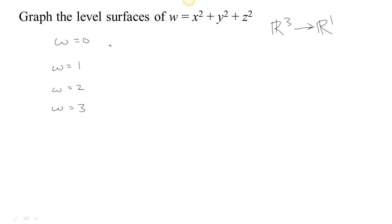So if w equals zero, we have x squared plus y squared plus z squared equals zero, which is just a single point, right? The only way that these three non-negative numbers could have to be zero would be if they were all zero. So we just have a single point at the origin.